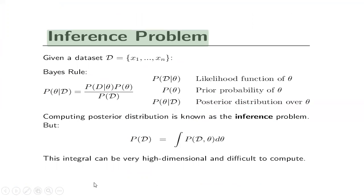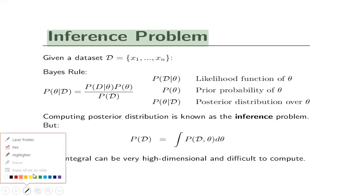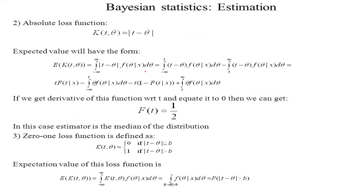The Bayesian inference problem is: given a dataset D = {x₁, …, xₙ} of random samples, Bayes' rule gives p(θ | D) = p(D | θ) · p(θ) / p(D). Here p(D | θ) is the likelihood function of θ, p(θ) is the prior, and p(θ | D) is the posterior distribution. The marginal p(D) equals the integral of p(D | θ) · p(θ) dθ, which can be very high-dimensional and difficult to compute.